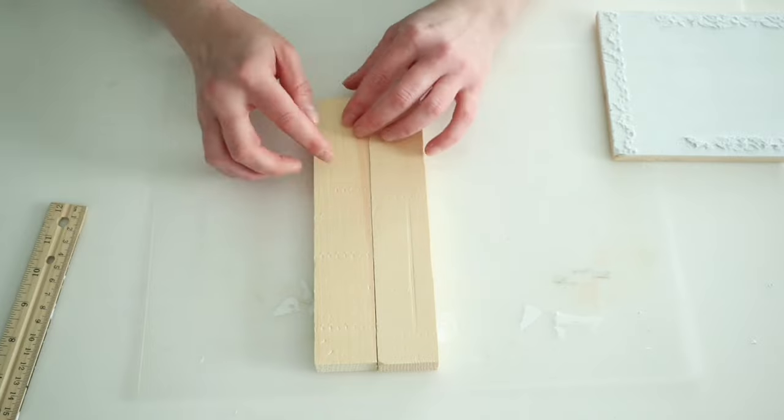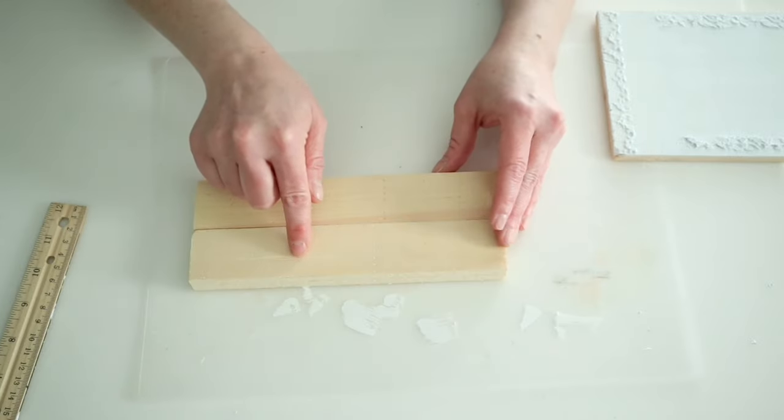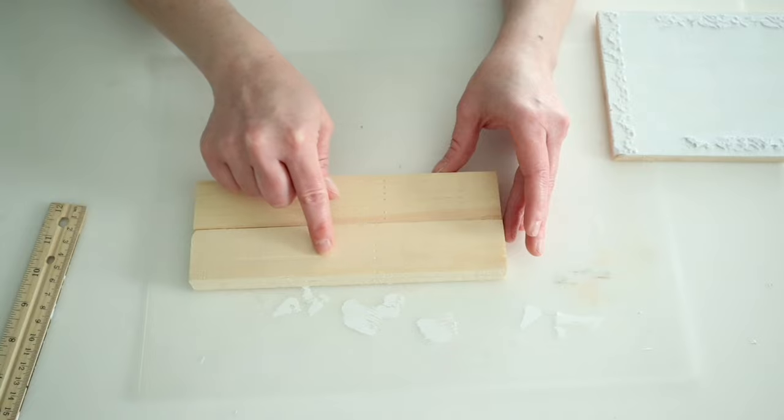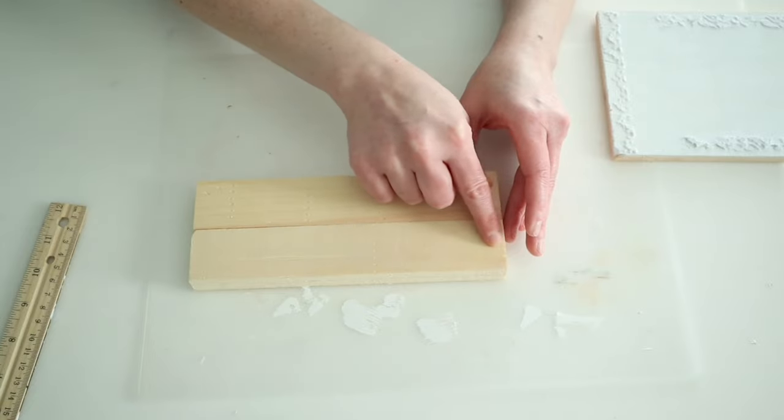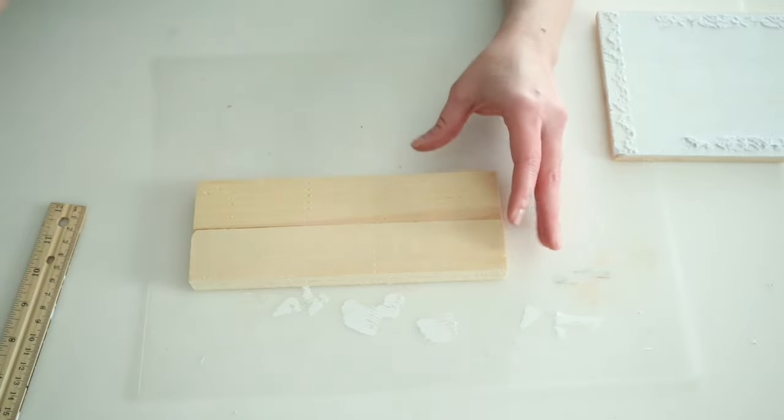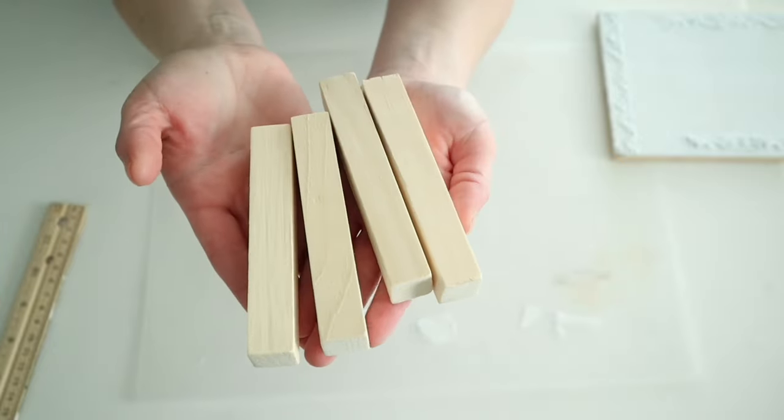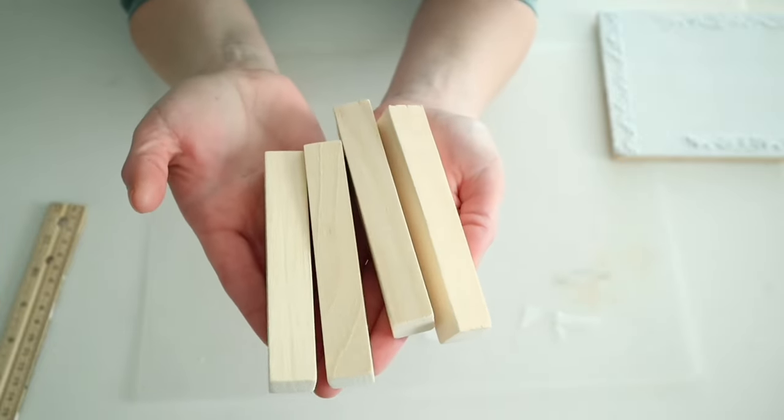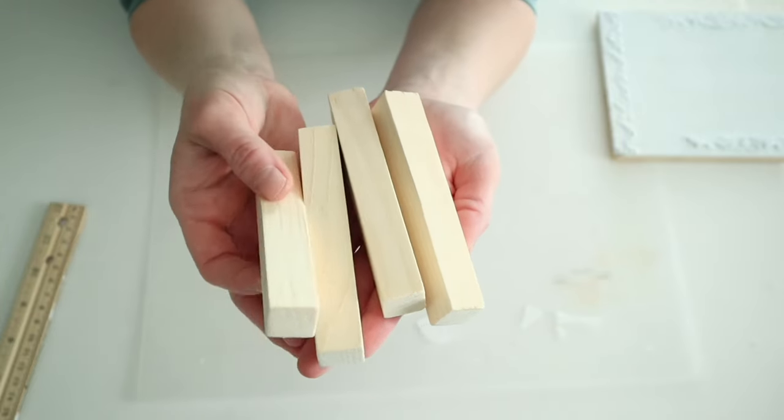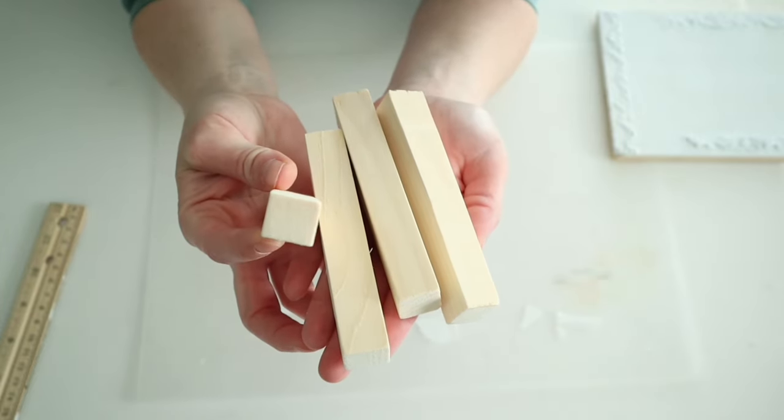I got it from Amazon and it's linked in the description below if you're interested, but you really don't have to cut these. You could just use four of these if you don't have a saw to cut them. But since I already had my saw on hand, I went ahead, I cut three inches off of them, and then I also cut these in half long ways. Hopefully, that makes sense, but you can see them here. I just cut the three inches off of them, and then I split them in half to make four little legs.